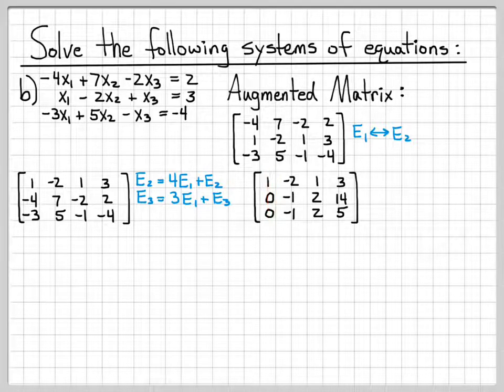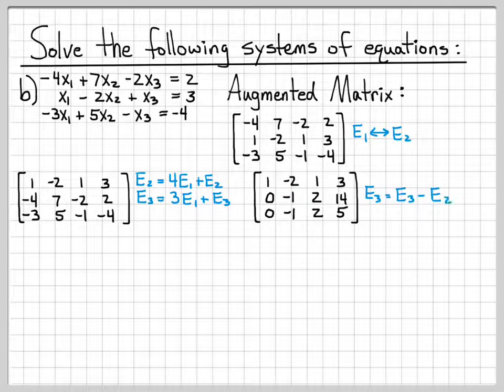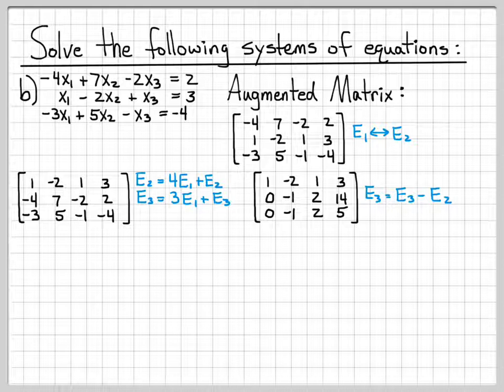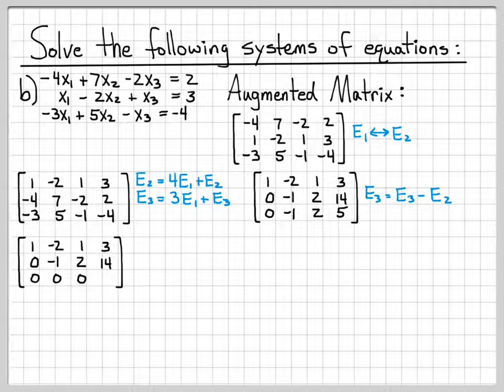I have 1 followed by 0s beneath it. Now what I would like to do is start getting a 1 here with 0s underneath that. So the next thing I'm going to do is let E3 equal E3 minus E2. That's going to cancel out this negative 1 here. Equations 1 and 2 don't change. But equation 3, I subtract minus 1 minus minus 1, this gives me a 0. And then 2 minus 2 gives me a 0. And then 5 minus 14 gives me a negative 9.